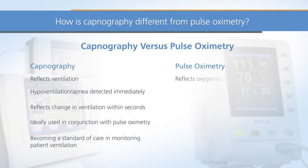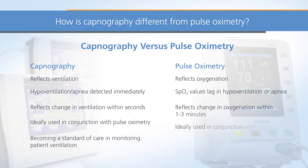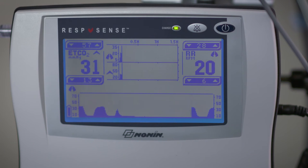Pulse oximeters, which have been the gold standard of care for monitoring sedated patients, rely on a significant drop in the patient's blood oxygen level to alert you to a respiratory problem. This takes much longer than capnography and the patient may be severely compromised before action is taken.